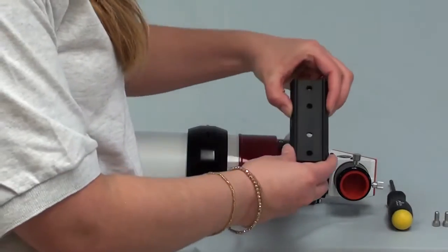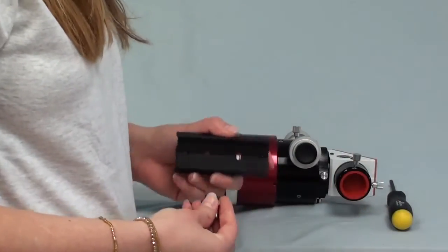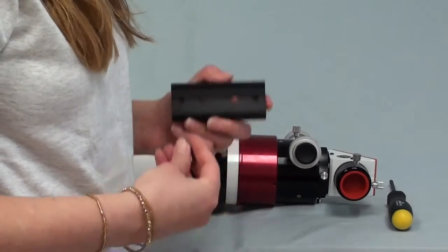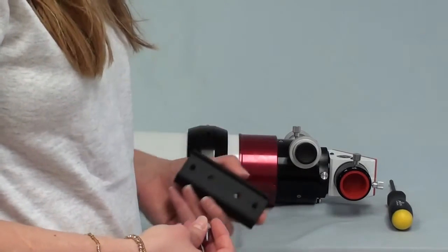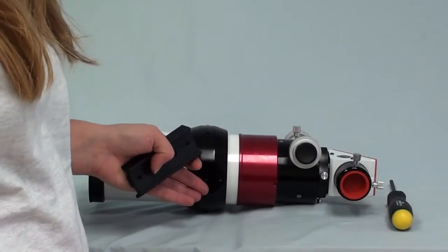Here we have a 4-inch Vixen style dovetail and some 1/4-20 screws. The type of dovetail you use will depend on the mount you're using. There are many types of mounts out there, so it's very likely you'll use a different style dovetail. Luckily, our clamshell is able to accommodate those styles.